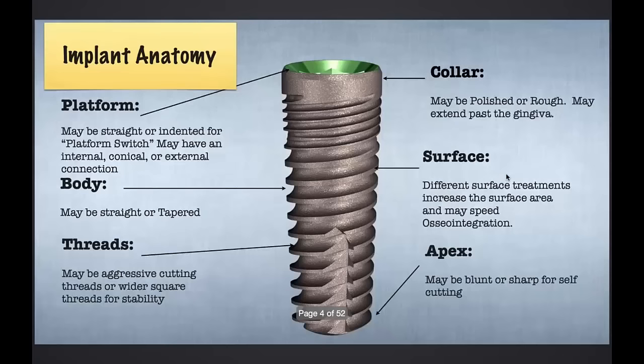First things first, let's get the terminology down. The implant platform is the top of the implant — the part that you put an abutment into. One thing that confuses newbies is that the diameter of the implant platform may or may not be the same as the diameter of the implant itself. We'll talk later about something called a platform switch, which is very important and integral to the different types of internal connections. With a platform switch, we've got a fatter implant with a smaller implant platform, and that's done on purpose.